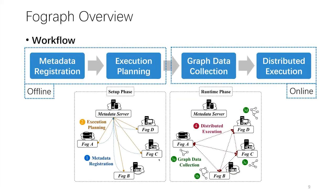FogGraph operates in four steps across two phases. In the offline setup phase, it profiles and registers metadata from fog nodes and generates an inference execution plan to guide the graph data placement. In the online runtime phase, it first collects data from end devices with compression and then launches a distributed runtime to compute inference. We next explain these steps in detail.